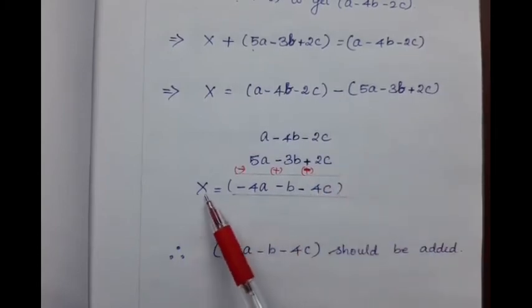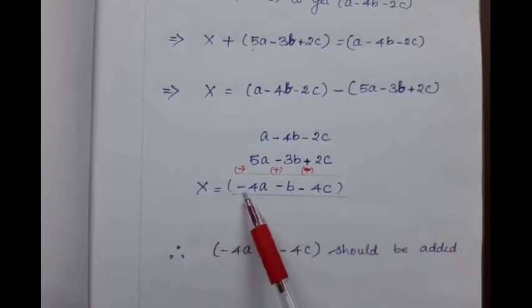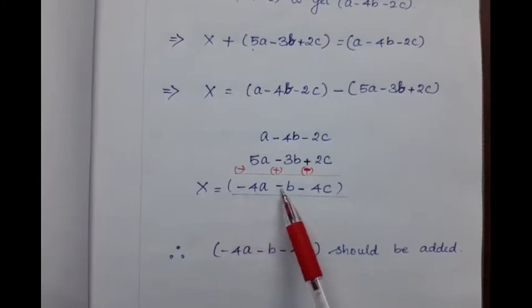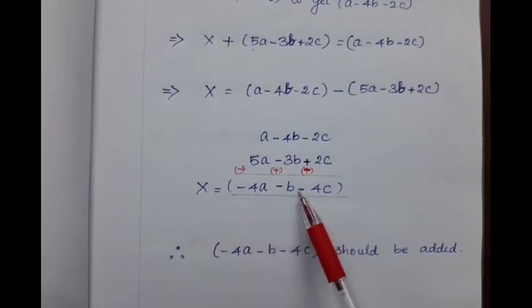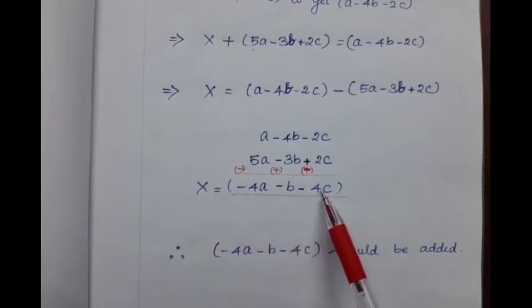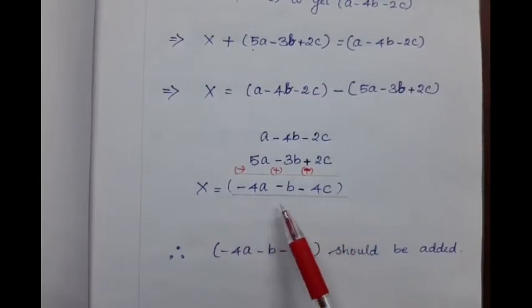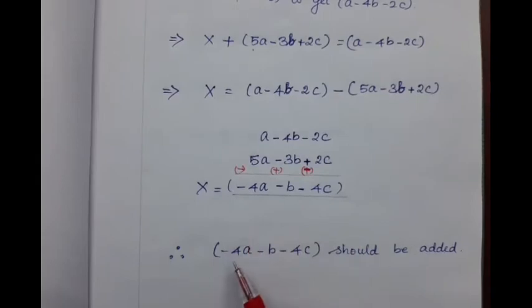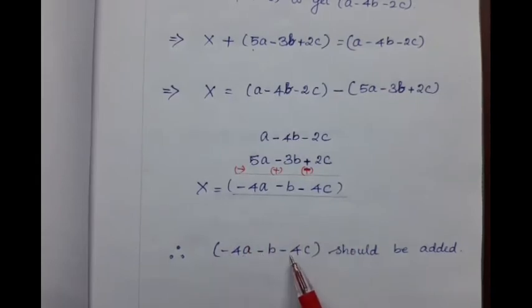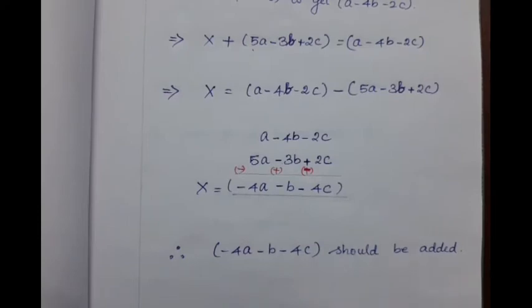Hence, x is equal to minus 4a minus b minus 4c, which is the required answer. That is, minus 4a minus b minus 4c should be added.